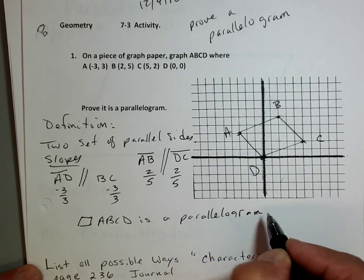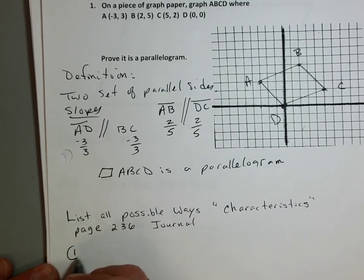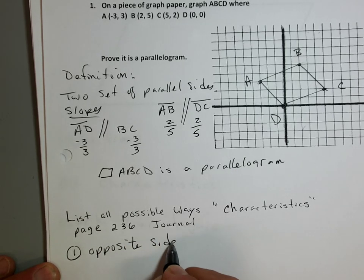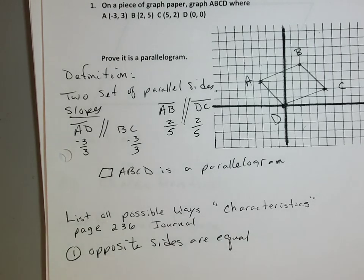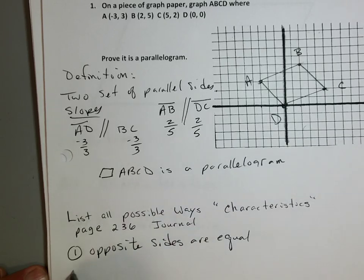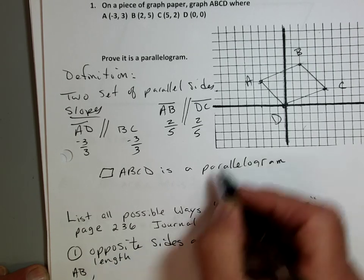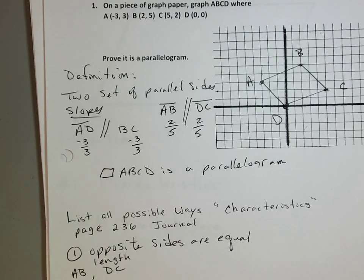Now it's got a bunch of characteristics, and that's what you guys did on your posters. Definition: parallel sides. Characteristic one is that opposite sides are equal. So let's find out what the lengths of these are — the length of AB and the length of DC.